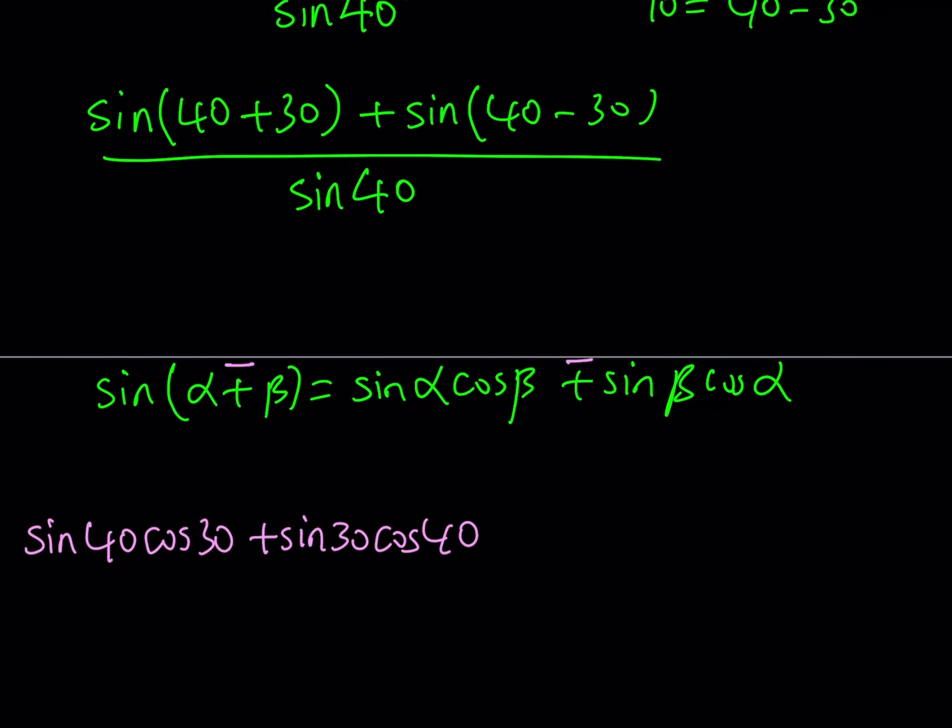And then what I can do is, for the second part, I used the formula for this one, now I'm going to use it for the other part. Same formula, it's just going to be a minus sign. So I can write it as sine 40 cosine 30 minus sine 30 cosine 40.